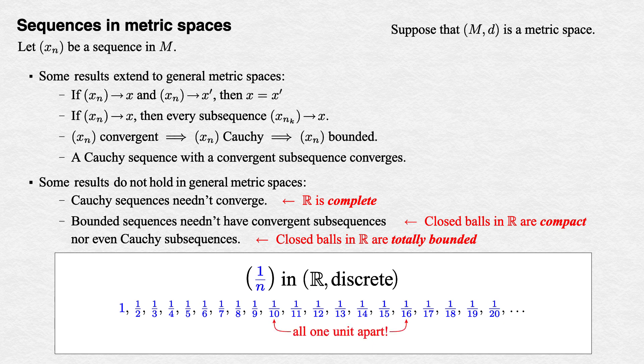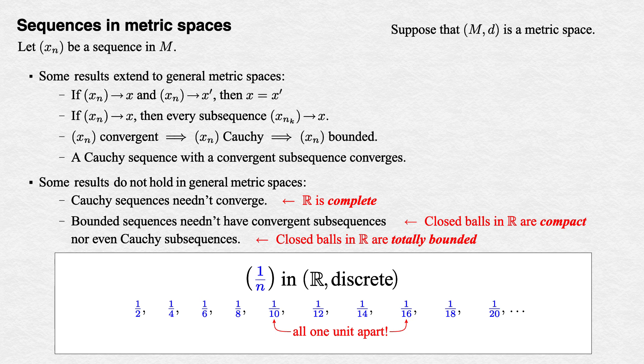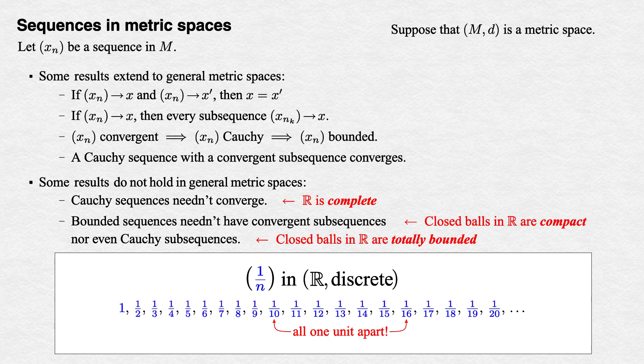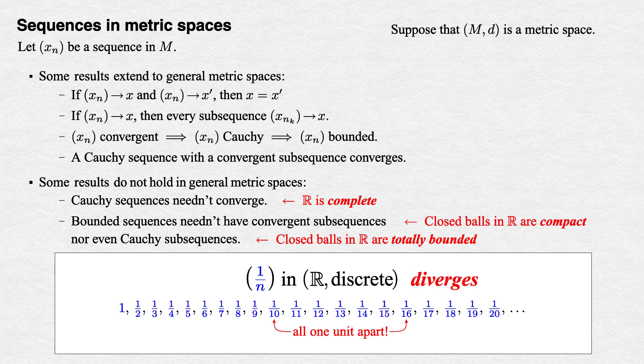Our same old friend the sequence 1/n in this discrete real line is easily seen to be bounded, because the distance between any two distinct terms will be exactly one. But then no matter what subsequence we take of it, and how many initial terms we toss out, the tail of the subsequence will always have diameter one. Thus no subsequence of this sequence is Cauchy, so none of its subsequences can converge, including the sequence itself, which in this metric space diverges.